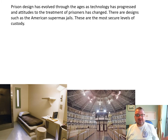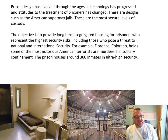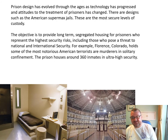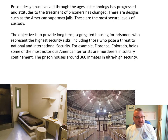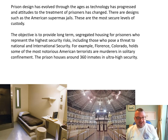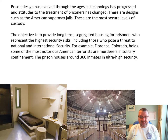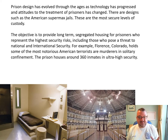If we take new designs such as the American supermax jails, they're the most secure levels of custody. Their objective is to provide long-term segregated housing for prisoners who represent the absolute highest security risks, including those who pose a threat to national and international security. The one I've picked is the prison in Florence, Colorado, which holds some of the most notorious American terrorists — the Boston Bomber, the Unabomber, El Chapo, the gangster who tunnelled out of a previous prison. They're all in there.